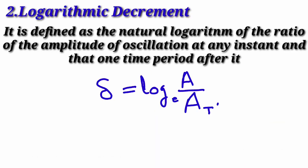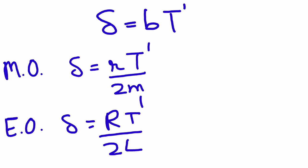The second term is logarithmic decrement. It is defined as the natural logarithm of the ratio of the amplitude of oscillation at any instant and that one time period after it. Logarithmic decrement is indicated by delta. It is the natural logarithm of the ratio — the amplitude at any instant in the numerator, and the amplitude one time period after it in the denominator. So when we take the natural logarithm of this ratio, we get the logarithmic decrement.